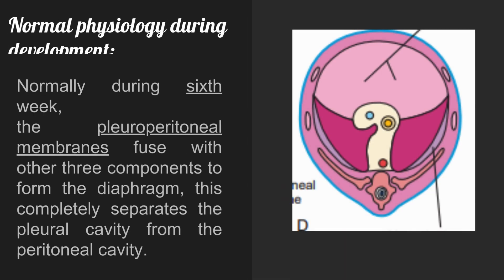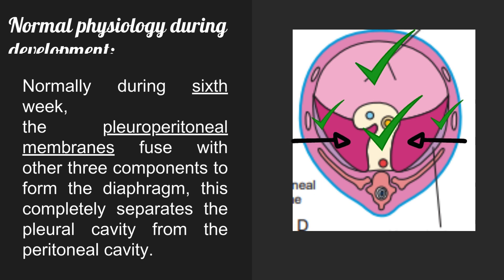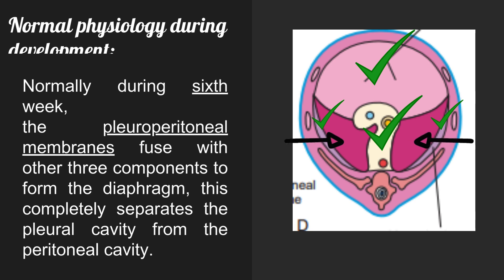Regarding normal physiology during development: normally during the sixth week, the pleuroperitoneal membranes fuse with the other three components, as discussed in the previous video on development of the diaphragm. This fusion completely separates the pleural cavity from the peritoneal cavity.